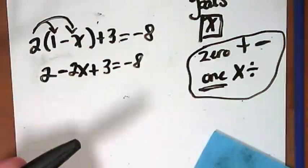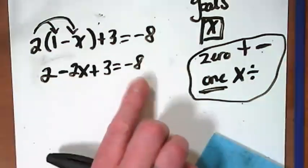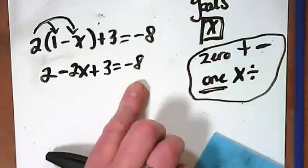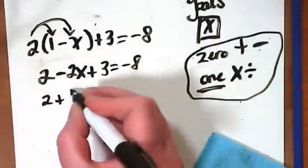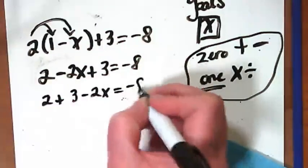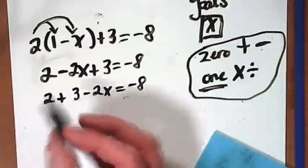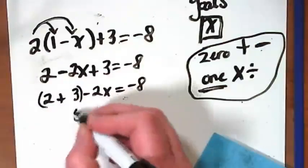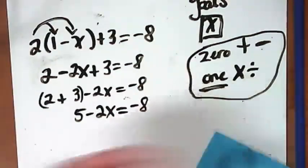Where are my like terms here? This two and this three and honestly also this negative eight, but it's on the other side of the equal sign, and so we're going to ignore it for now because our next step is to combine our like terms. Two plus three minus two X equals negative eight. I would normally do that in my head, but I'm trying to make it really clear. So here we want these two to go together. Five minus two X equals negative eight. All right.